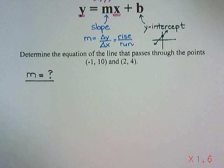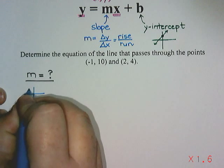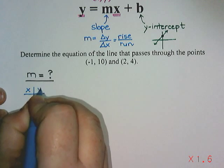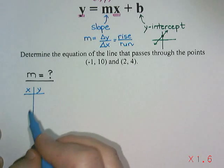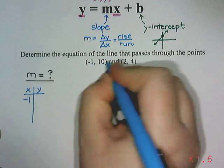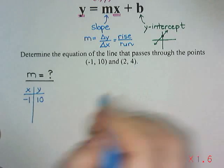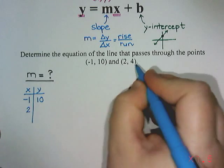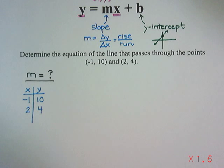So first method is make a table of values. So I'm going to put x in the first column, y in the second column, and I'm going to take the two points that were given in the question and write them into the table. So I'm going to put negative one under the x and 10 under the y. And then the second point, two, four, I'm going to put two under the x and four under the y.